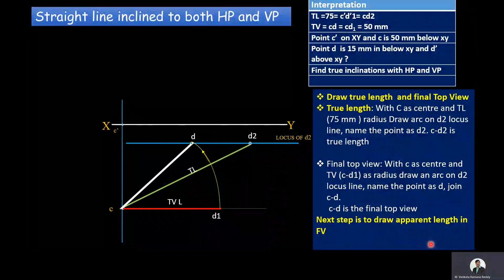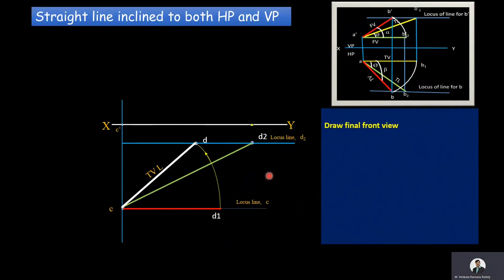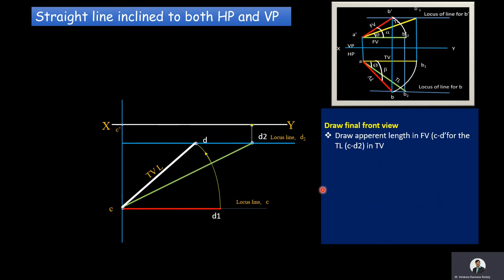The next step is drawing the final front view. For this, we need to draw the apparent length of the front view for the CD2 true length. CD2 is the true length in the top view, and for this true length we draw the apparent length in the front view. At D2, draw a projector vertically up — that projector cuts the XY line at D2-dash. Join C-dash and D2-dash. C-dash D2-dash is the apparent length in the front view.